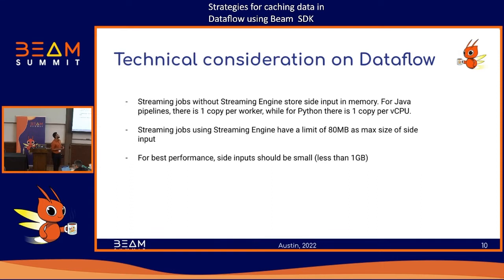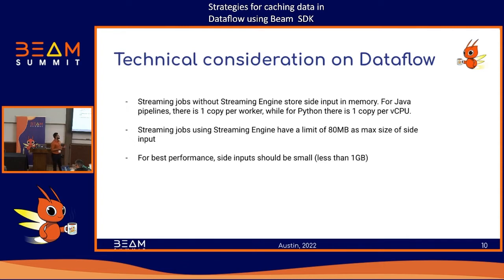When using Dataflow there are a few considerations to keep in mind with side inputs, especially for streaming jobs. For streaming jobs that don't use Streaming Engine, the side input is stored in memory, so its size is limited by the worker machine's memory. In Java you have one copy of the side input per worker, whereas in Python you have one copy per vCPU — so on a two-core machine you'd have two copies of the side input.